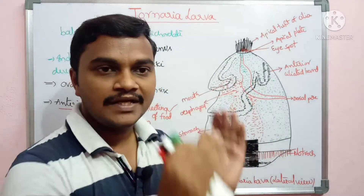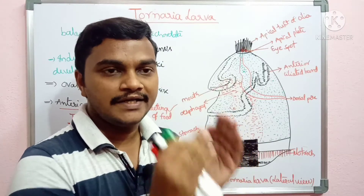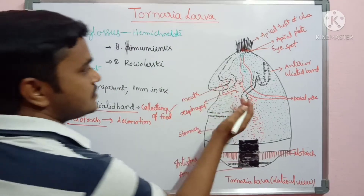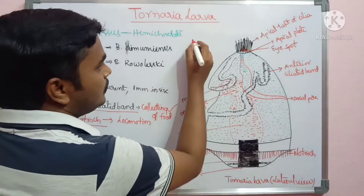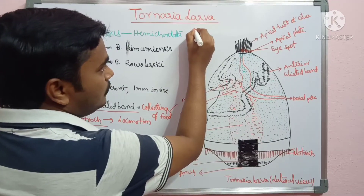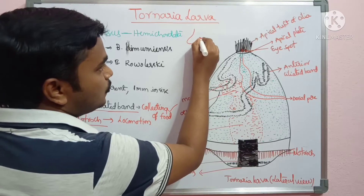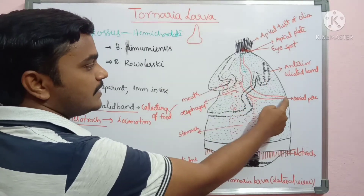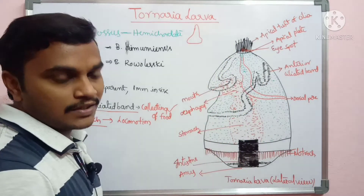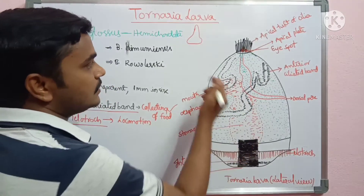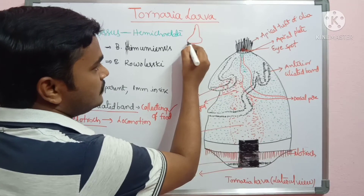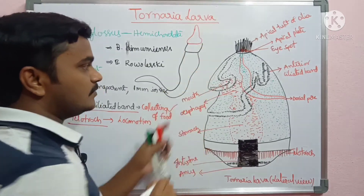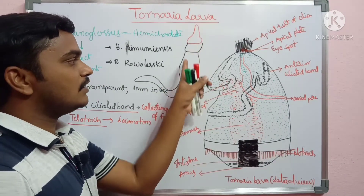The oval shape is converted into a worm-like condition. In Balanoglossus, the proboscis is present in the anterior region. This proboscis is derived from the dorsal sac or water sac. The remaining region forms the collar and trunk area. These are the main parts of Balanoglossus: proboscis, collar, and trunk.